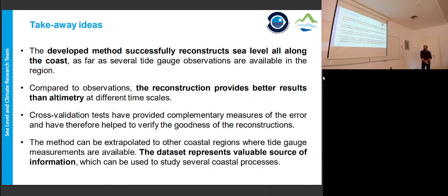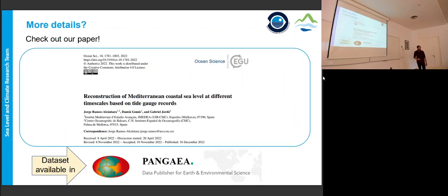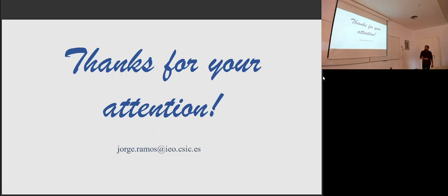Some conclusions. The method successfully reconstructs the sea level along the coast. Compared with the observation, the reconstruction provides significantly better results than coastal altimetry. The cross-validation test provides complementary measurements of the error, and therefore verifies the goodness of our reconstructions. And also, the method can be extrapolated to other coastal regions, with the limitations I set. If you want more details about the work, you can check our paper published on Ocean Science, and the dataset is available, freely available in the Pangaea repository. That should be all. Thank you all for your attention.